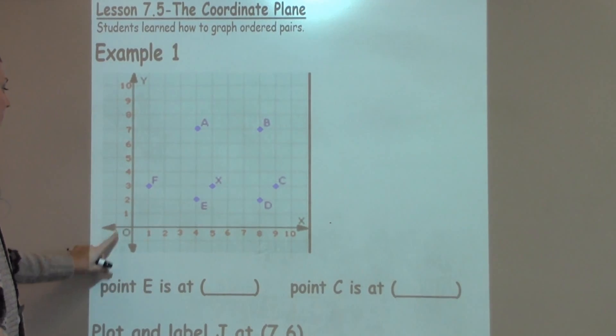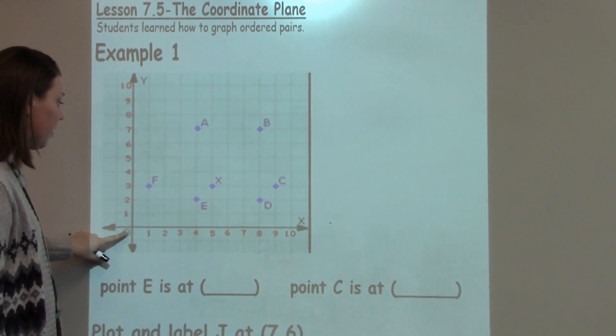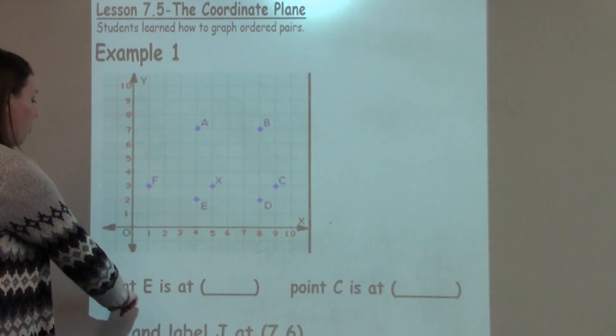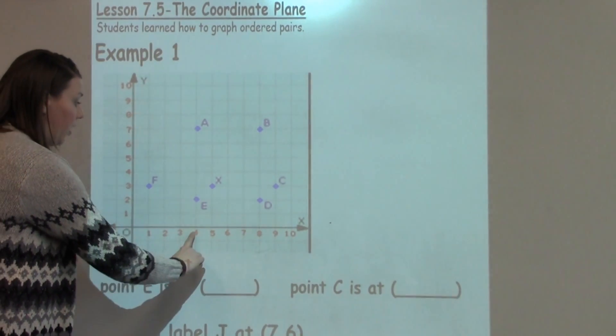Let's go ahead and look at point E. Point E, if we go over, is at 4 and then we go up 2. So point E is at 4, 2.